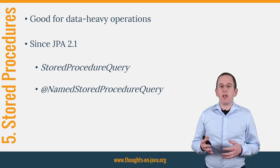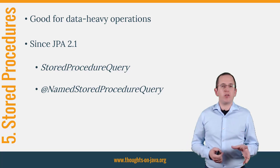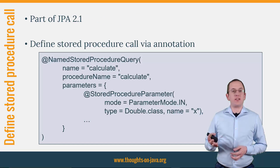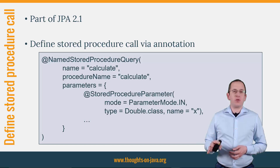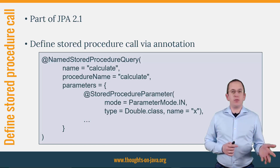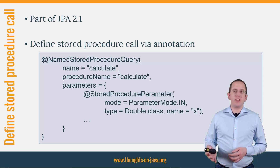That changed with JPA 2.1 and the introduction of the StoredProcedureQuery and the NamedStoredProcedureQuery annotation. Let's take a closer look at the annotation-based approach. The code snippet on this slide shows an example of a NamedStoredProcedureQuery annotation. This query has the name 'calculate' and calls the stored procedure with the same name. It also uses multiple parameters, each defined by a StoredProcedureParameter annotation which defines the parameter mode, type, and name. The parameter mode specifies if the parameter is used as input, output, input/output, or as a result set cursor. The one in this example is a simple input parameter.